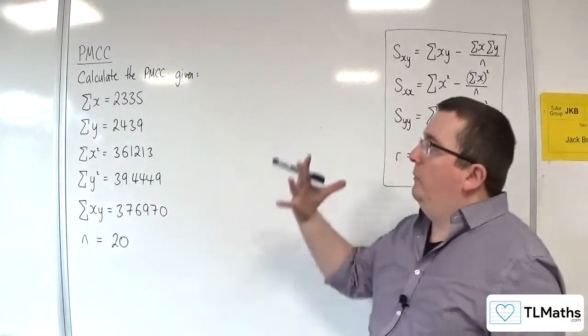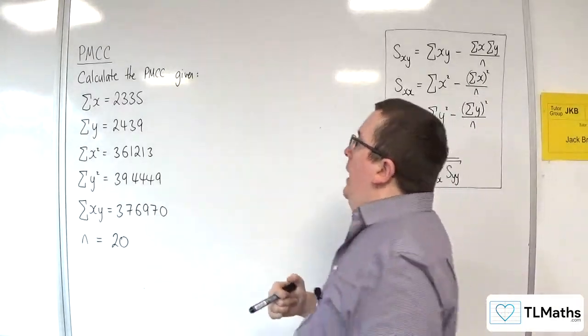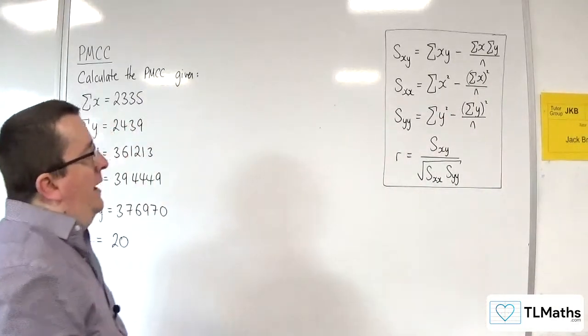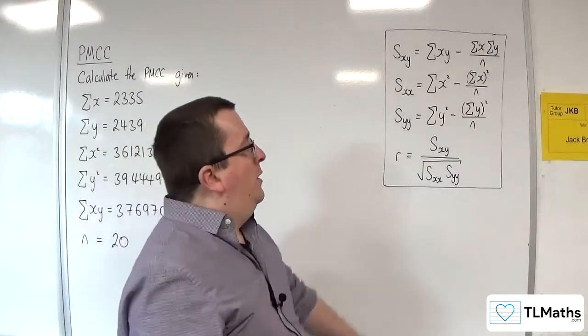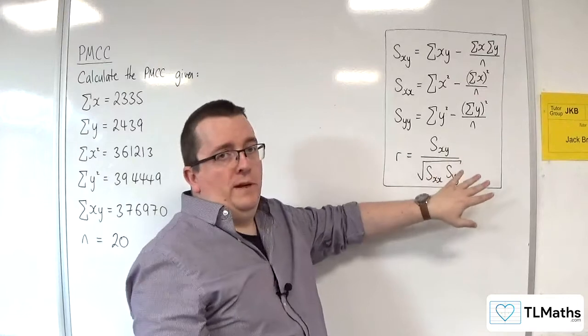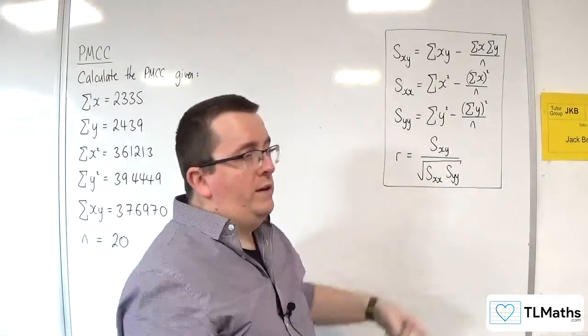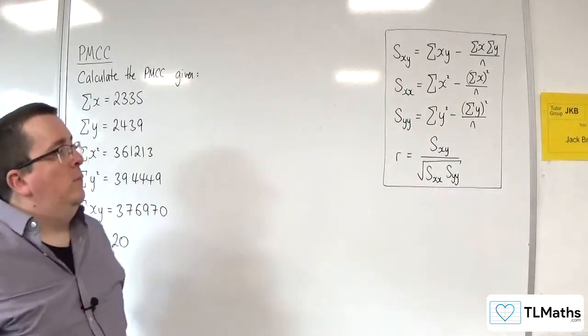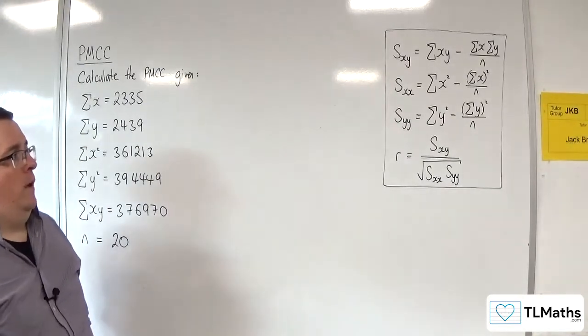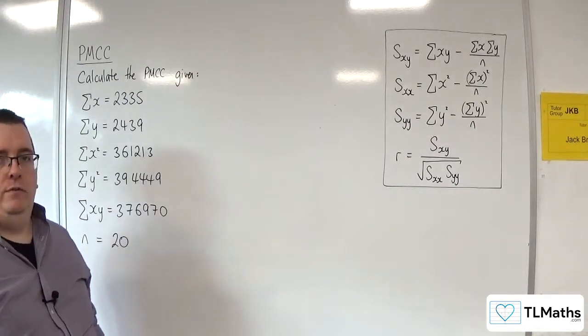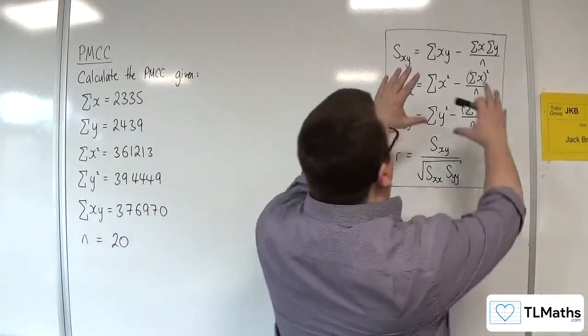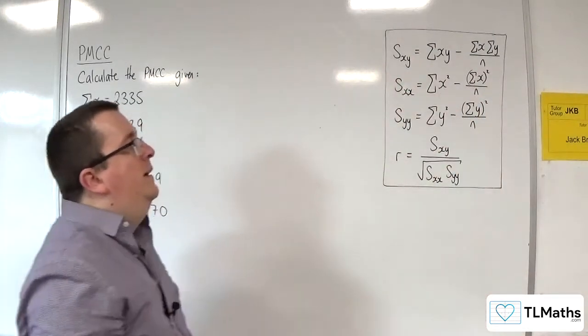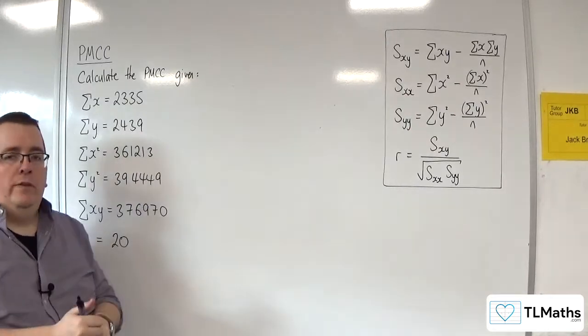So, in this video, we have some summary statistics, and we are going to calculate R. This is what's given to you in the formula booklet. There's also the larger formula for R, which has all those pieces in one thing, in one fraction, which I tend to avoid. Probably best just to work out the individual pieces and then substitute them in. There's less room for error that way.